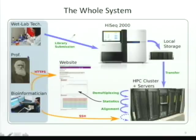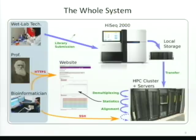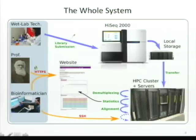This is a conceptual overview of the whole system. Lab technicians submit samples to our facility. This is a picture of the DNA sequencer — the iSeq 2000. It costs about $700,000 and about a million dollars per year to operate. The sequencer writes data directly to local storage, which we then transfer to a separate cluster about a mile away where our big storage and compute resources are. We do a bunch of different analysis on that, present results on a website, and professors, computational biologists, and bioinformaticians can access the results in a variety of ways.